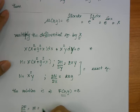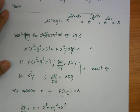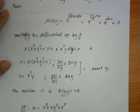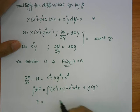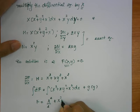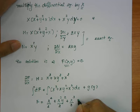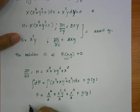M is equal to x to the power 3 plus xy to the power 2 plus x squared. So we find f by doing the integral with respect to x plus g(y). We would get f equal to x to the power 4 over 4 plus x squared y squared over 2 plus g(y).